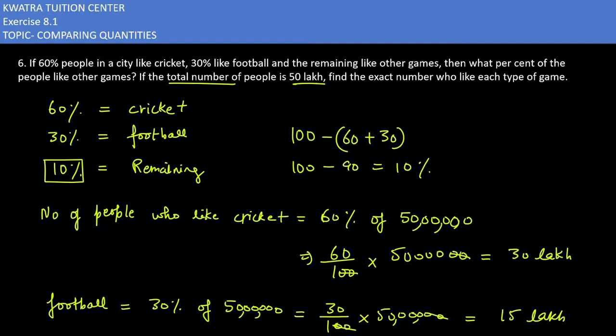You have to find the number of people who like other games. Other games, how much percentage is? 10% of 50 lakh. And 10% of 50 lakh. This will give you 5 lakh.